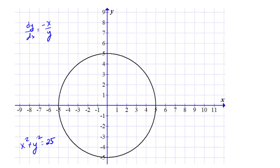Let's say I wanted the tangent line at this point (4,3). The point (4,3) is on the curve because we can see that 4² + 3² is 16 + 9, which is 25, so that does work.